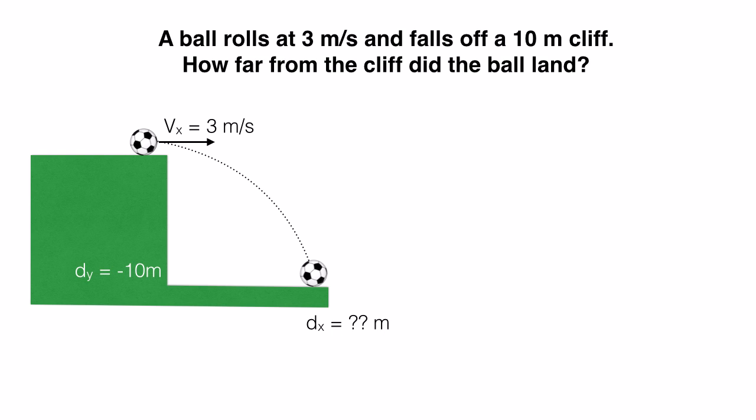The first thing we do is draw a picture stating the obvious information given to us in the problem, such as the initial velocity in the x is 3 meters per second and the displacement in the y was 10 meters down, or negative 10 meters.